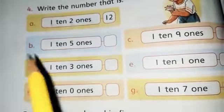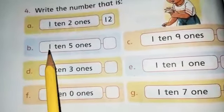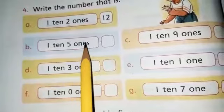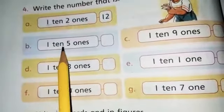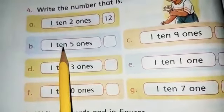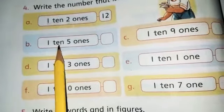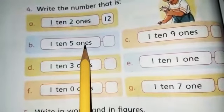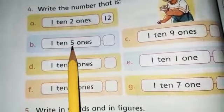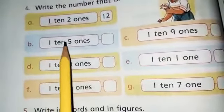Now in part b one ten five ones. How many tens are here? Yes there is only one ten and how many ones are there? Five ones. So one ten plus five ones becomes fifteen. One ten five ones become fifteen.